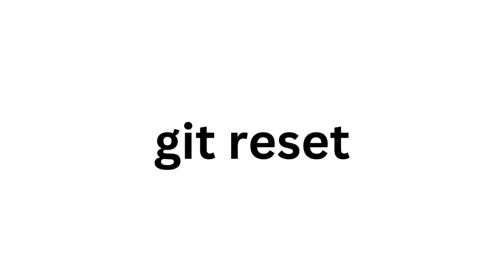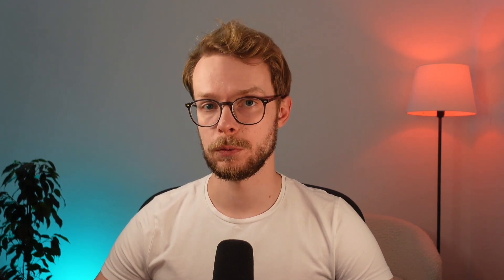Git reset. This command is used to undo commits, but it can also be used to undo changes that you haven't committed yet. This is by far the most dangerous command in git because it can actually remove commits. The way it works is that you run git reset and then specify the commit you want to reset to. You can also provide a flag that specifies what to do with the changes that have been undone.